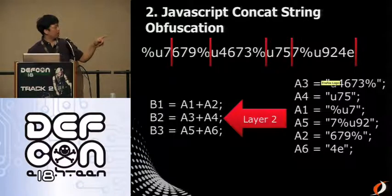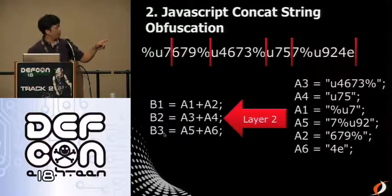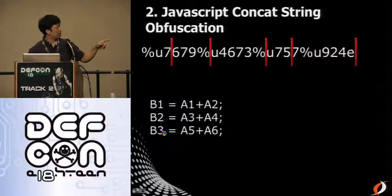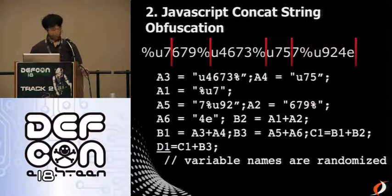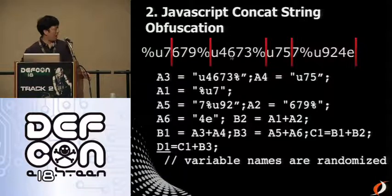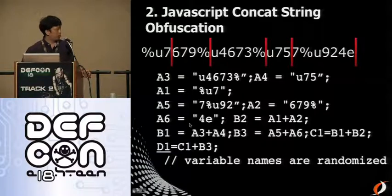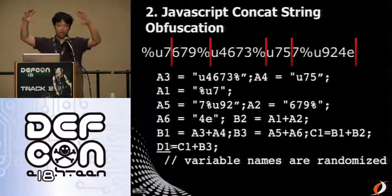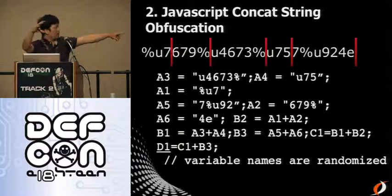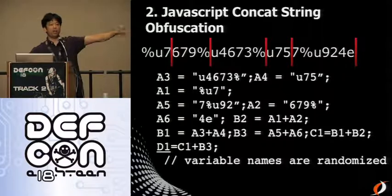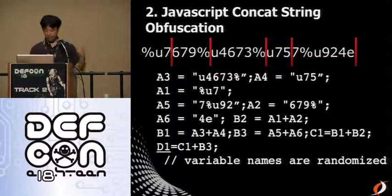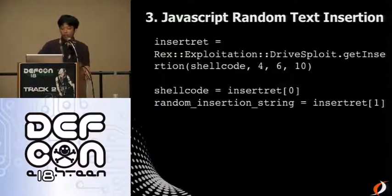The second feature is JavaScript concat string obfuscation — very commonly used. You call it and give it a string, which can be the shellcode. Metasploit has encoders already, but when putting shellcode inside JavaScript, you have more ways to obfuscate it. The algorithm: give it a piece of shellcode, split the strings, generate JavaScript that adds the strings back. You randomly chop the shellcode into segments, assign segments to variables, then scramble the assignments so the middle section appears first. This is layer one. Then layer two: add segments together into layer two variables, scramble again. Continue until everything is added together. All variable names are randomized.